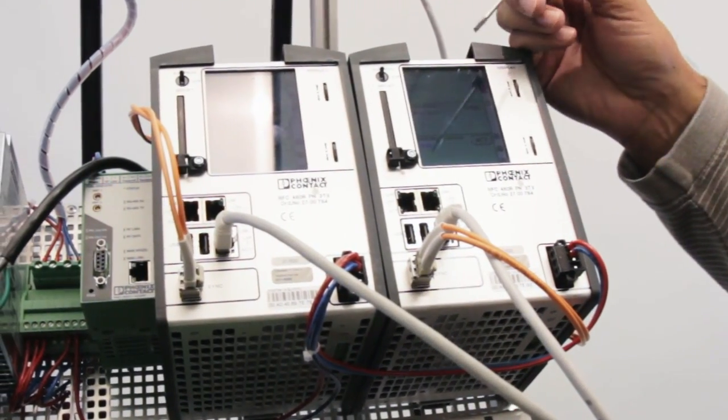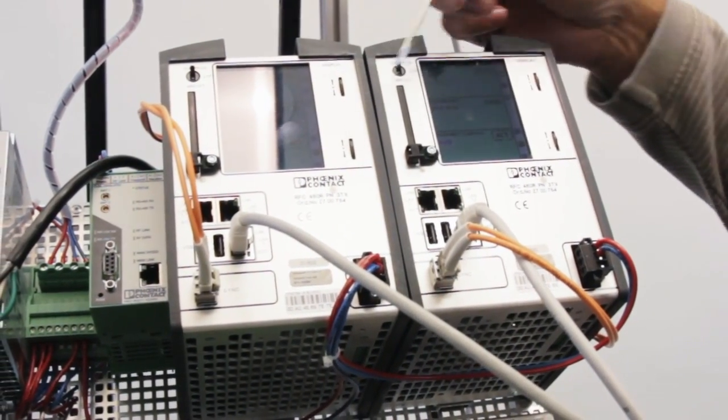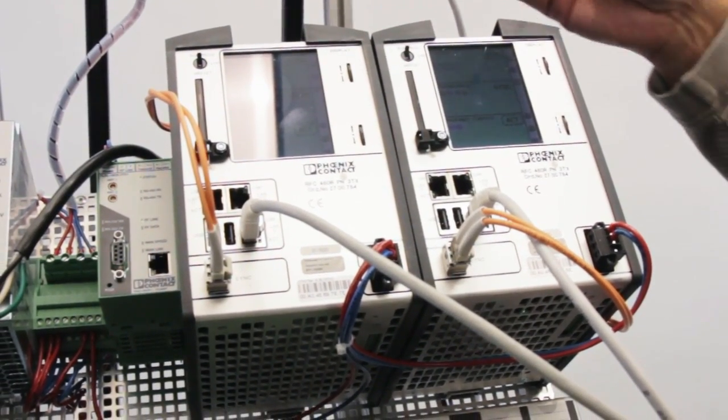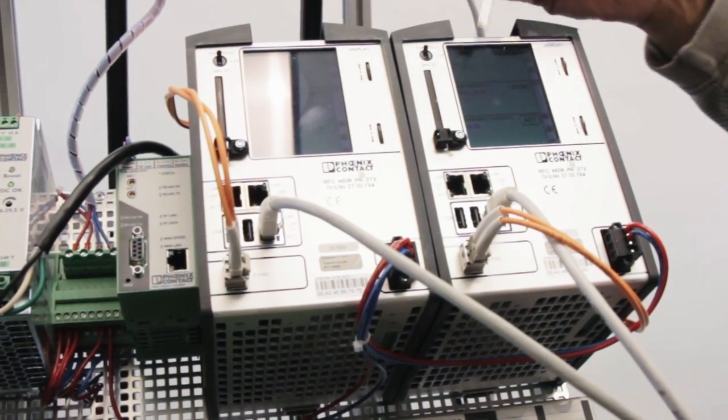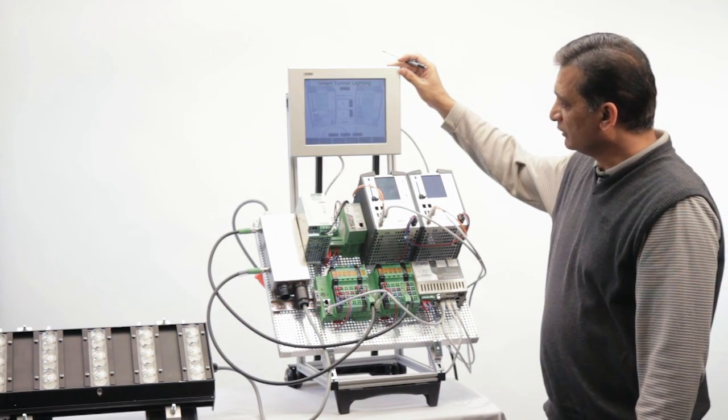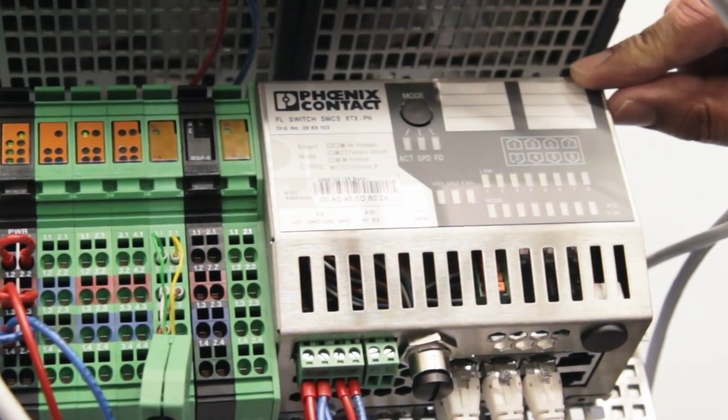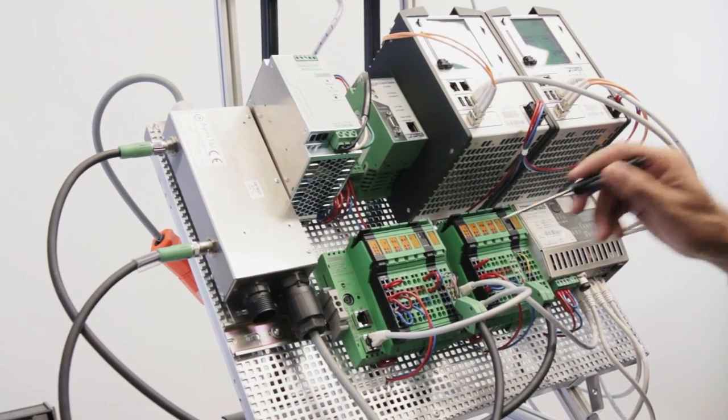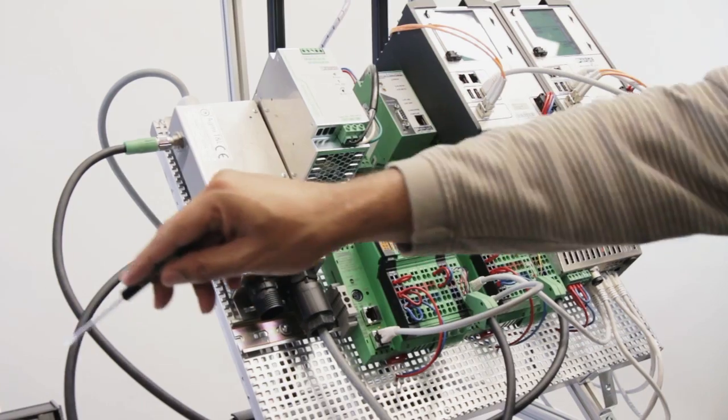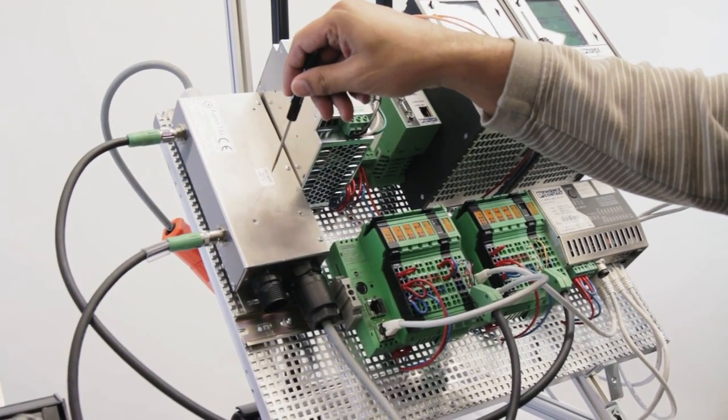The hardware includes, as I mentioned, two redundant RFC controllers. These are RFC 460R. The HMI is a 10-inch screen. Then we use our Phoenix Contact FL switch. Two ILCs, which actually control the lighting and they also communicate with the controller.